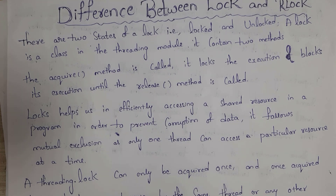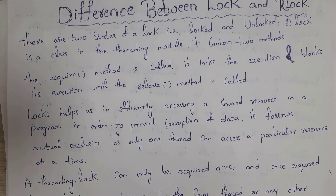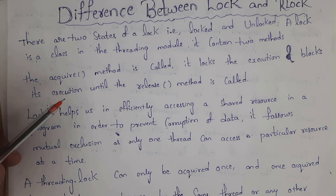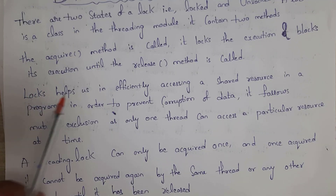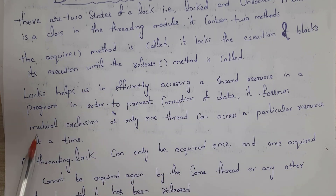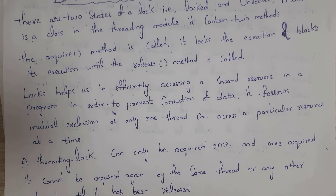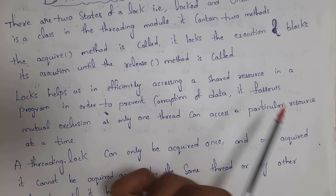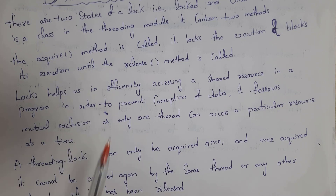Locks help us in efficiently accessing a shared resource in a program in order to prevent corruption of data. By using lock we can efficiently access a shared resource, and it will help in preventing corruption of data. It follows mutual exclusion, as only one thread can access a particular resource at a time.